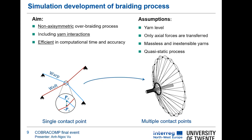We have some assumptions before going to the development of the model. We assume the yarn is at yarn level and only transfers axial forces — meaning no shear and bending support. The yarn is assumed to be massless and inextensible. We derive our mathematical equations based on a quasi-static process, starting from a single contact point to multiple contact points.